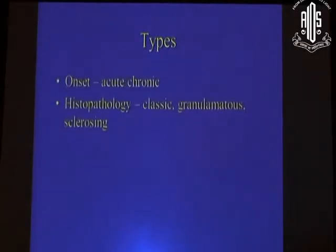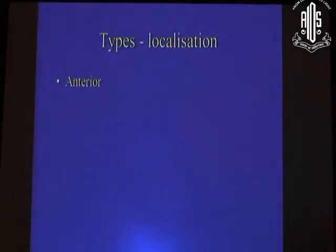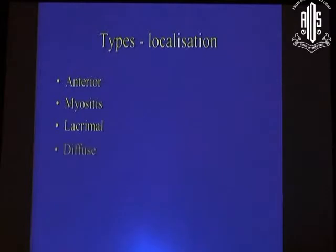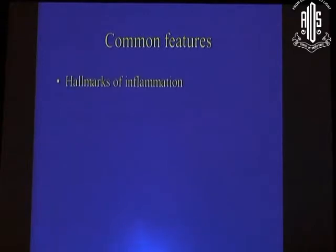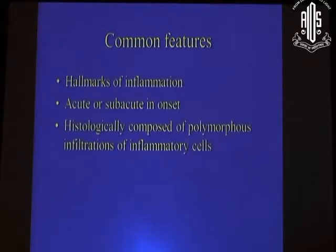There are various types. It could be acute or chronic. Histopathology is classic. You can divide it based on location in the orbit — it could be anterior, it could be muscle involvement (myositis), it could be lacrimal gland involvement (dacryoadenitis). It could be diffuse in the orbit or epical in the posterior orbit. The common features are the hallmarks of inflammation, and when you do a biopsy it shows all forms of infiltrate. Here you can see the typical features of a dacryoadenitis: there is redness, inflammation, warmth in the orbit, conjunctival congestion, and lacrimal gland enlargement — a subacute presentation of dacryoadenitis.